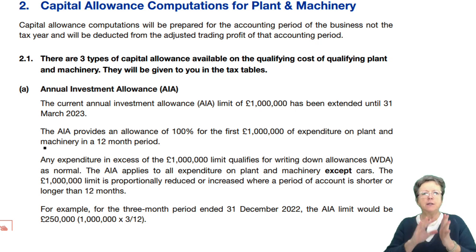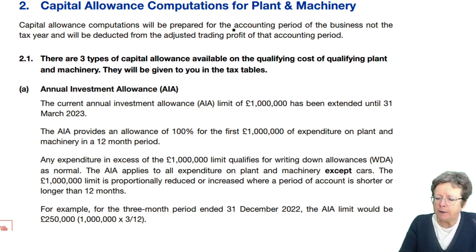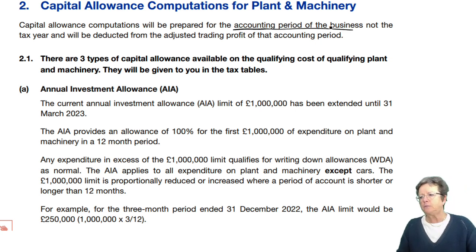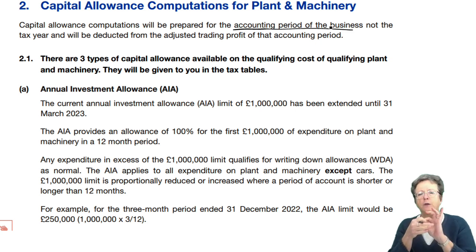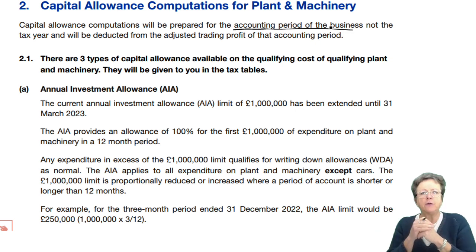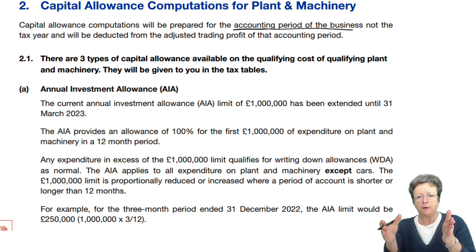It needs to be done nicely, neatly, and well presented, with all the lines in the right places. It's prepared for an accounting period of the business, not for the tax year, so it links clearly with the accounts. If you have a year-ended 31st of December set of accounts for 12 months, then the computation for capital allowances will be for that same period of time.